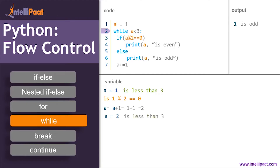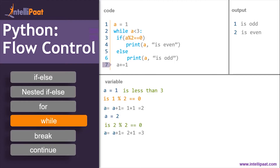Now go back to the while part — is two less than three? Yes, condition is true. Check if two mod two equals zero — yes, condition is true. So this time we execute the if part: print 'a is even.' Since a is two, two is even. Increment a by one — two becomes three. Back to the while: is three less than three? Condition is false. Final output: one is odd and two is even.